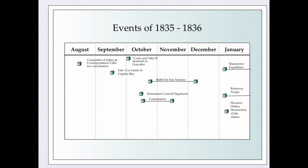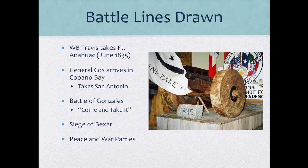By January, there was an expedition called the Matamoros Expedition — a group of Texans who invaded Mexico — and it ended disastrously. At the same time, the so-called Runaway Scrape began, with settlers fearing hostilities and fleeing western parts of Texas around San Antonio, moving further east toward the Louisiana border in case war broke out. Houston at that time also ordered the destruction of the Alamo, though we know that didn't happen. William Travis took Fort Anahuac in June of 1835, and the Siege of Bexar — a battle for the Alamo and its surroundings — was also underway.